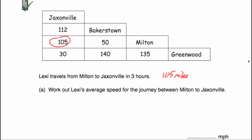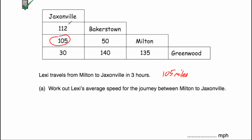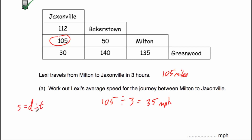Part A says work out the average speed of the journey from Milton to Jacksonville. Speed is miles per hour. We know she travels 105 miles in three hours, so if we divide 105 by 3 we can see how many miles she travels an hour. 105 divided by 3 equals 35. So her average speed would be 35 miles per hour. Alternatively, speed equals distance divided by time: 105 divided by 3 equals 35 miles per hour.